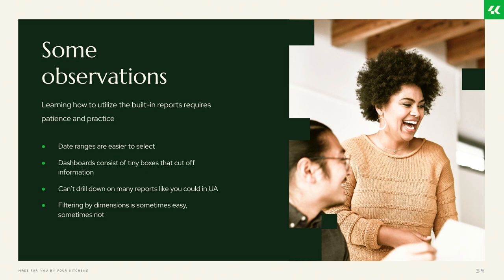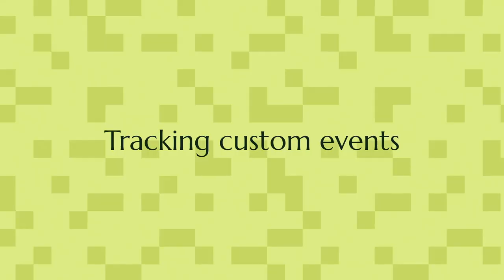My summary of personal findings: date ranges are easier to work with — easier to select with more options. But many boxes cut off information and there's no easy way to expand to see the full file name or page name. I've had some trouble drilling down into information in some cases, though in others I found the filter was right there and easy to use. It's going to take more practice and patience to get used to it, and Google keeps changing it, so it should keep getting better.